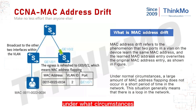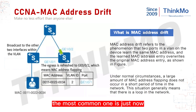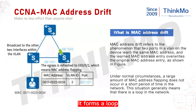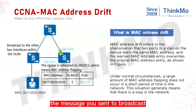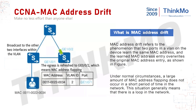Let's talk about under what circumstances MAC address drift could occur. Usually, the most common cause is what I just showed in the picture — between the three switches, a loop is formed. As we know, for a loop, a broadcast message will be transmitted and flooding occurs throughout the entire switched network. This will cause our switch to learn the same MAC address from multiple interfaces.